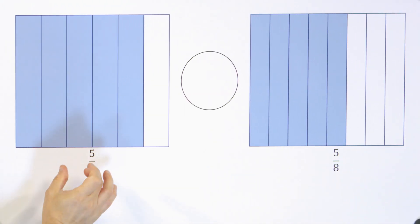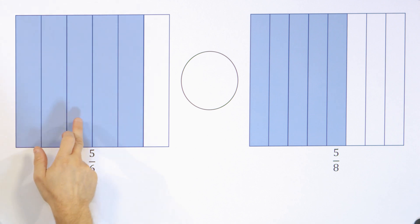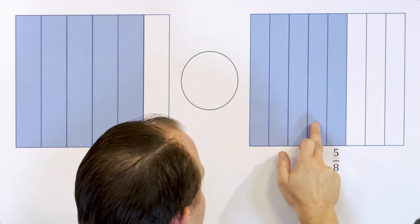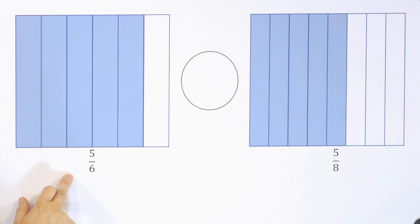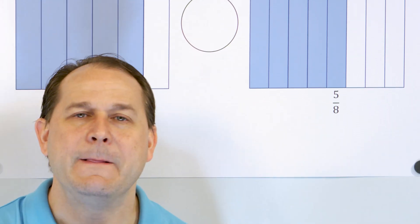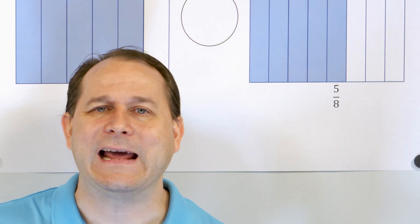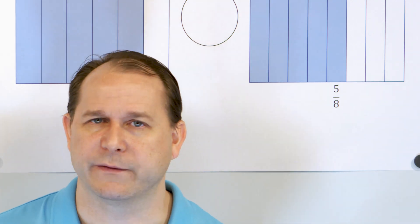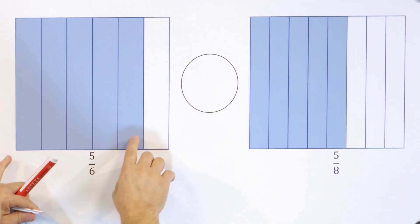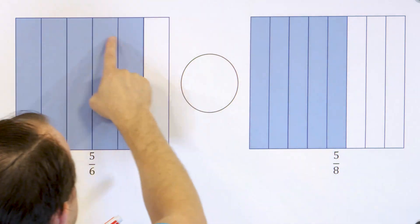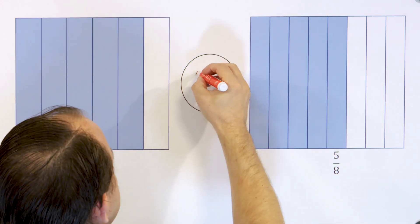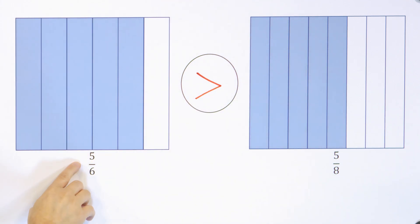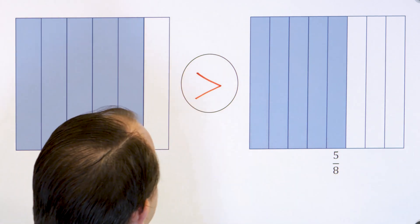What if we're comparing five sixths and five eighths? We have five pieces out of six compared to five pieces out of eight. It's almost impossible to know which one's bigger just by looking at the fractions, even with experience. Drawing pictures is the easiest way to see that five sixths is way bigger. So we say that the fraction five sixths is greater than the fraction five eighths.